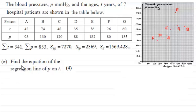And in part D now, we're asked to find the equation of the regression line of P on T for four marks.